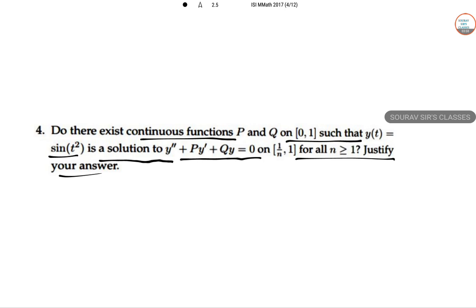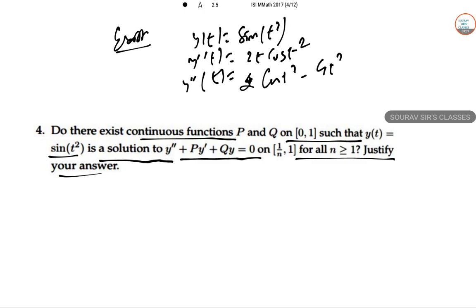Let's assume such functions exist. Given y(t) = sin(t²), we compute y'(t) = 2t cos(t²) and y''(t) = 2cos(t²) - 4t²sin(t²).